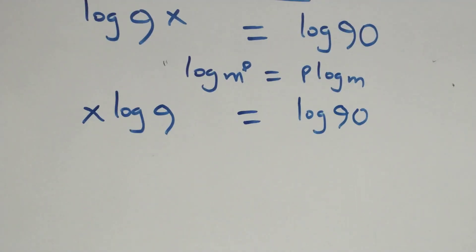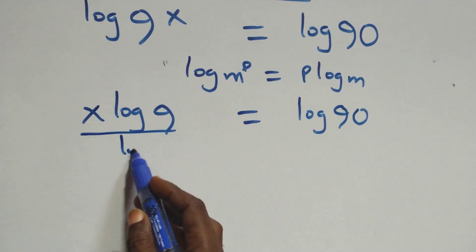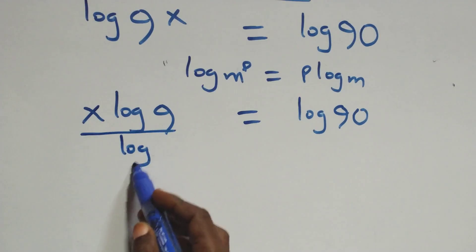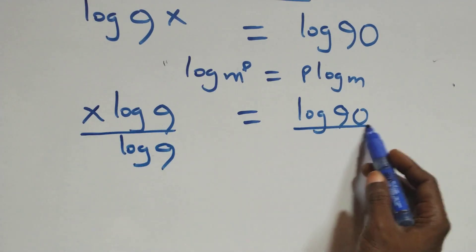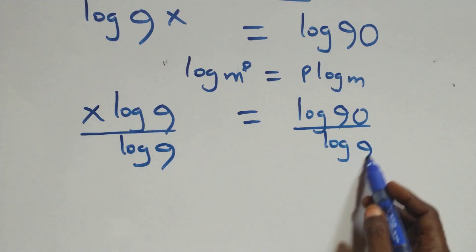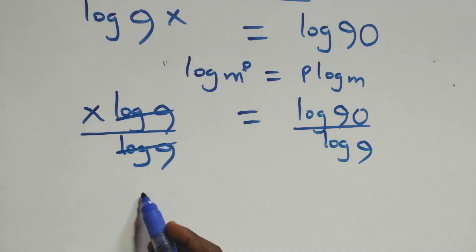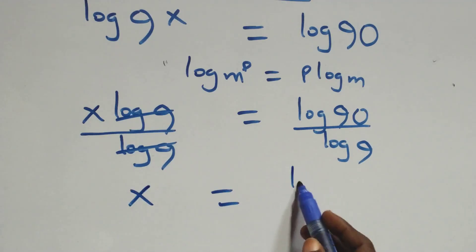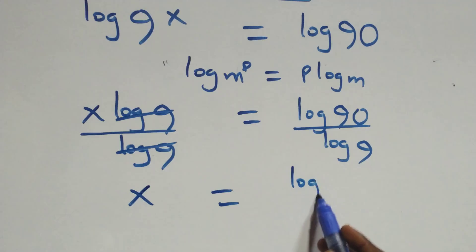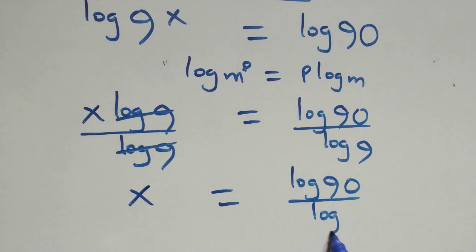The next step here, divide this side by log 9, and also divide this side by log 9. The log 9 terms cancel each other, and we have x equals to log 90 over log 9.